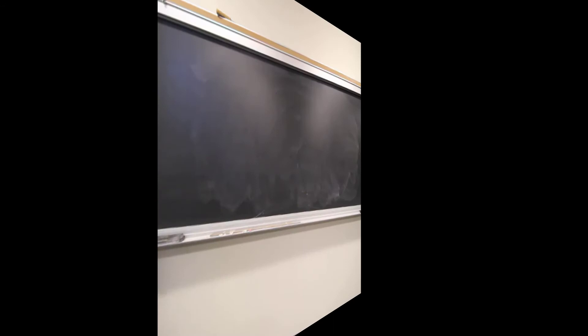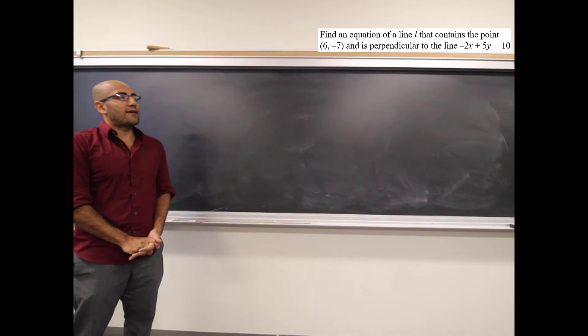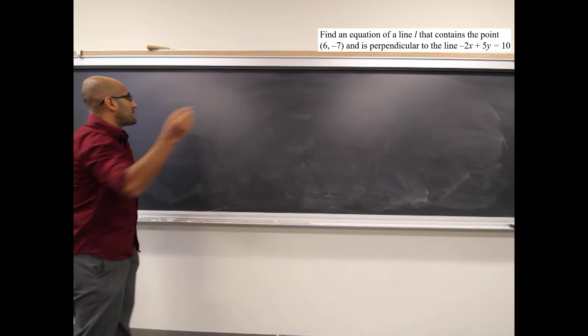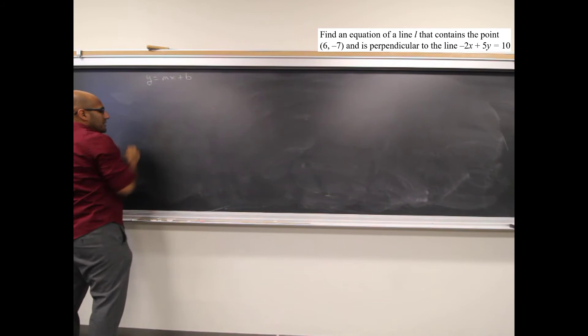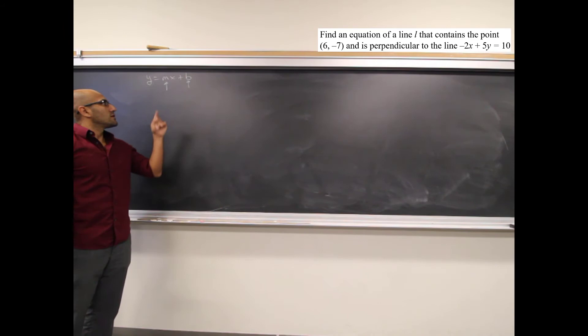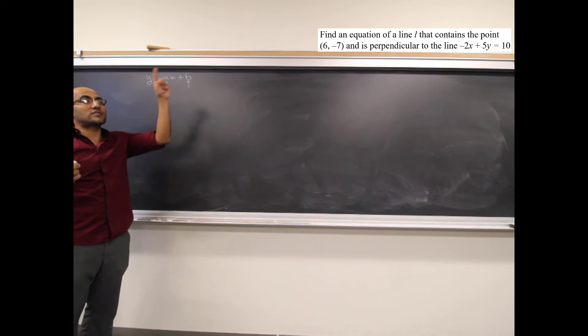Find the equation of line L that contains the point (6, negative 7) and is perpendicular to the line negative 2x plus 5y equals 10. Whenever you see 'find the equation of the line,' write y equals mx plus b. The fact that it's perpendicular tells us to use opposite reciprocals for the slope.